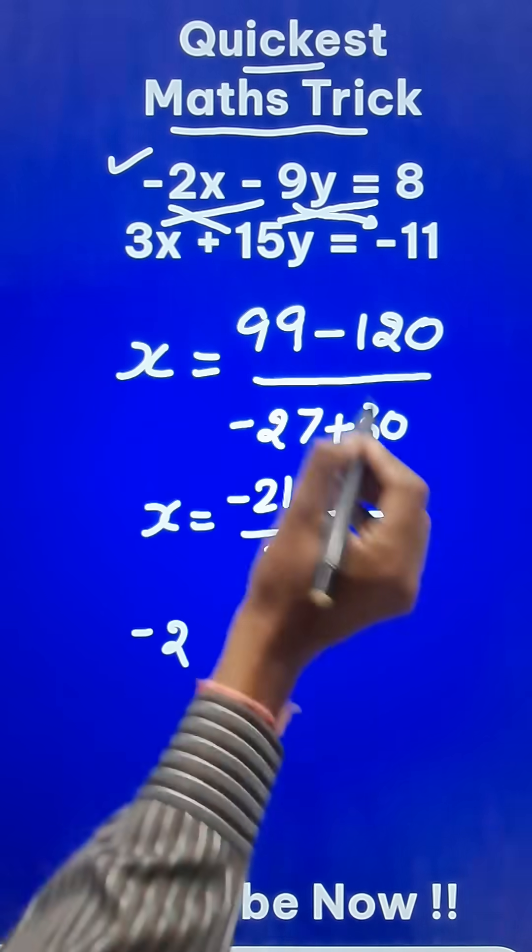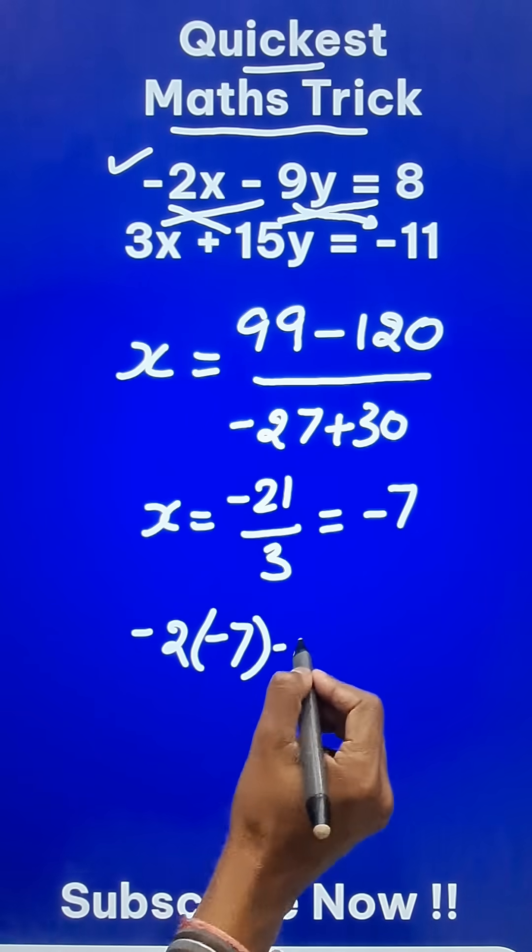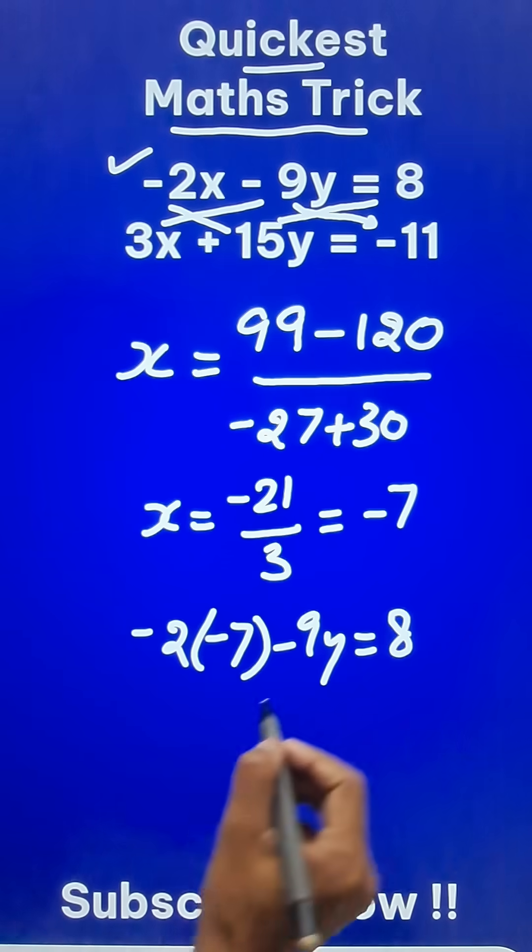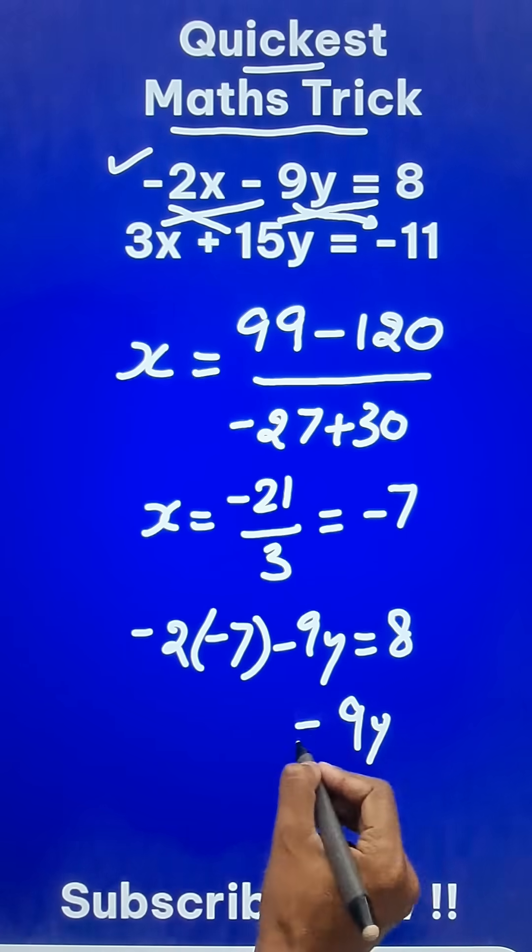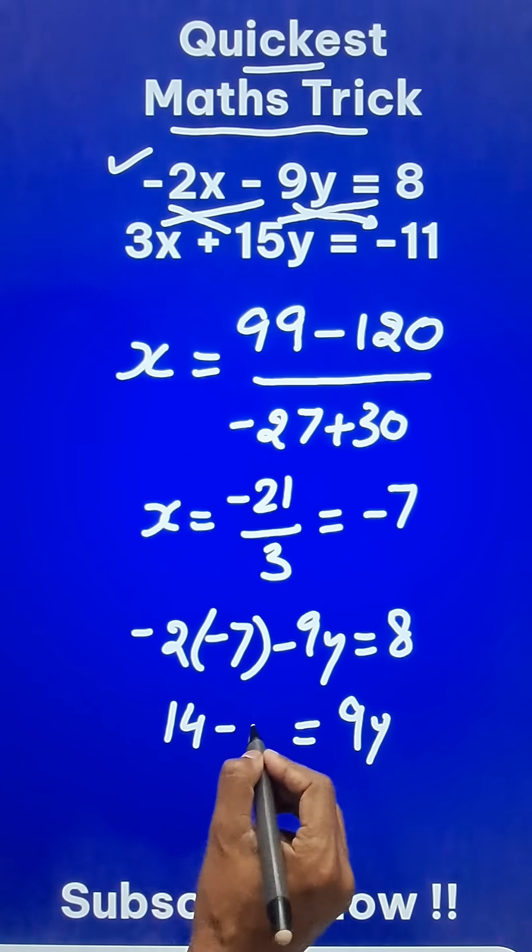Minus 2 times x, which is minus 7, minus 9y gives us 8. And so 9y equals, this is 14 and 8 gets subtracted.